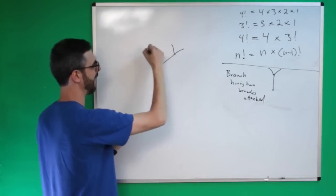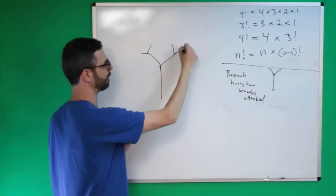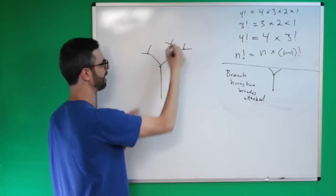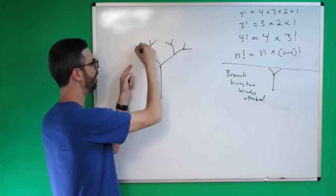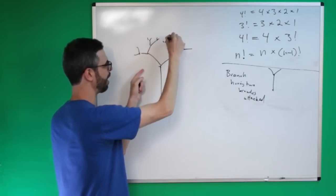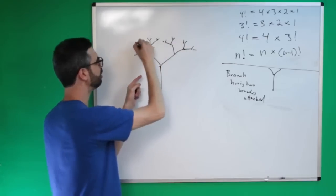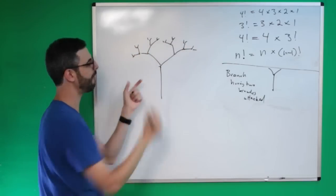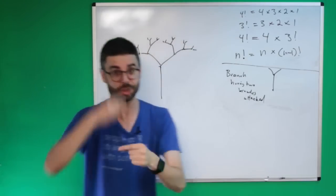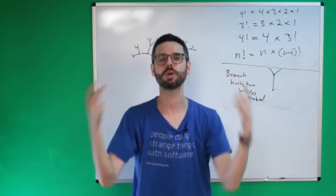But these are also branches, so they have two branches attached. And these are all also branches, so they have two branches attached — et cetera, et cetera. So a branch is defined as something that has two branches, and those have branches. This is known as recursion.